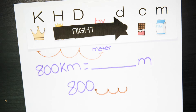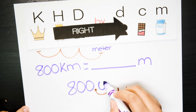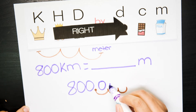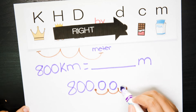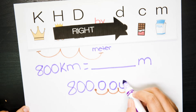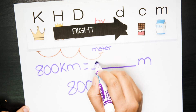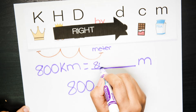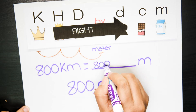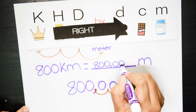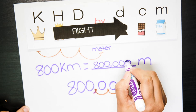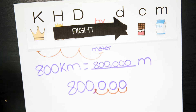Now you're going to add the zeros in these spaces that you just made. Your answer should be eight hundred thousand meters.